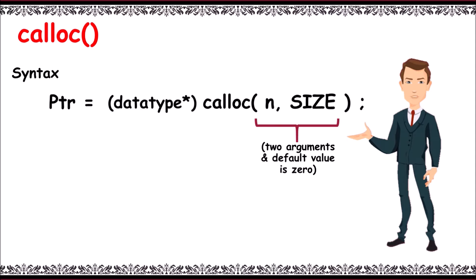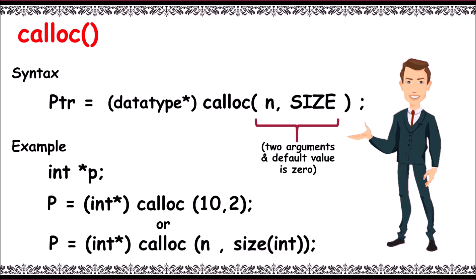For example, int asterisk p. P equals int asterisk calloc of 10 comma 2. 10 elements with 2 bytes will be allocated. Or you can also write like p equals int asterisk calloc of n comma size of int. N elements, each element size being the size of int.